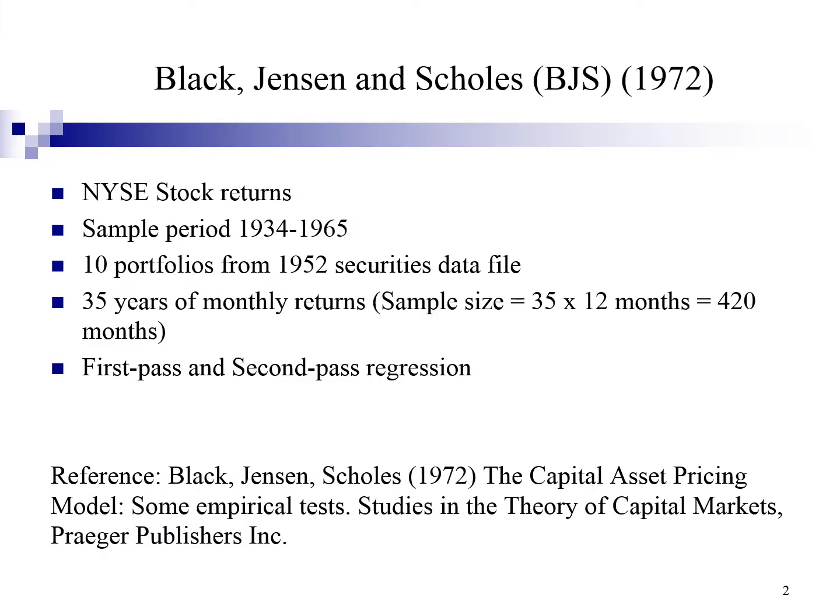Black, Jensen, and Scholes (1972) conducted a study on New York Stock Exchange stock returns. The objective was to present additional tests on the Capital Asset Pricing Model and provide insights into the structure of security returns. The sample period spans from 1934 to 1965. They use monthly data and perform a first-pass and second-pass regression.